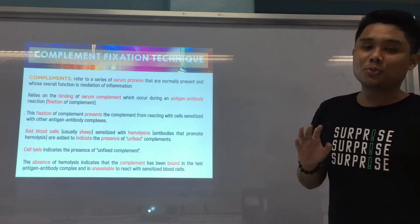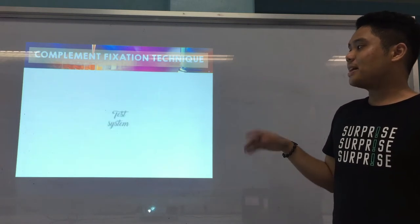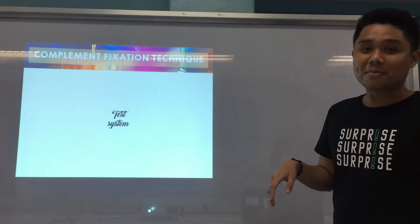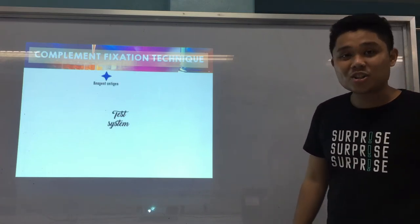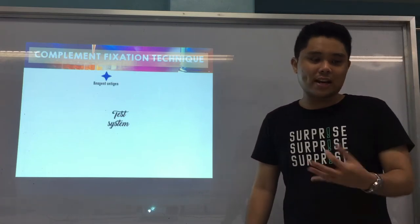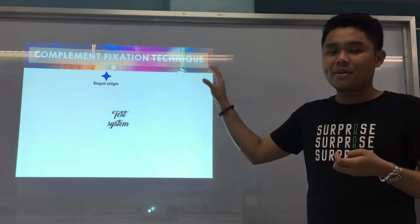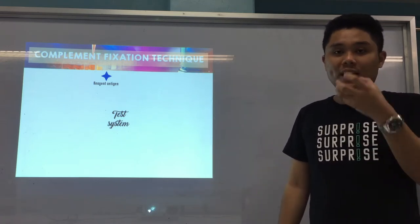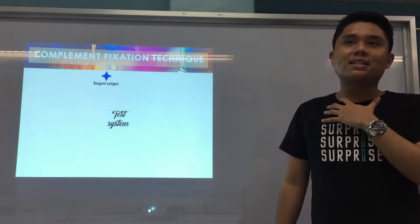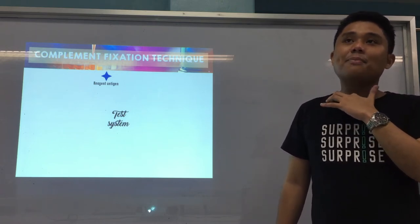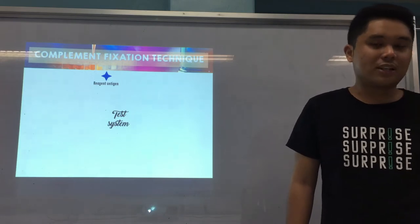The absence of hemolysis indicates that the complement has been bound already in the initial testing stage and is no longer able to lyze the RBCs. To help you understand more, here is an illustration. The reagent antigen — let's say you are testing for antibodies to amoeba, for amoebiasis or Entamoeba histolytica. Complement fixation tests are typically used for detecting antibodies.